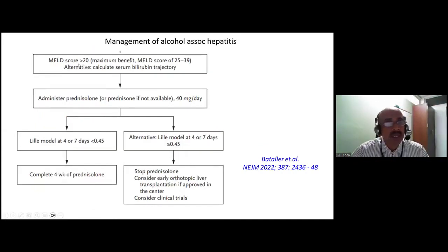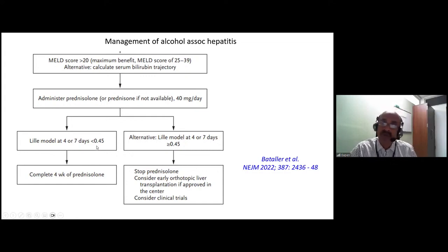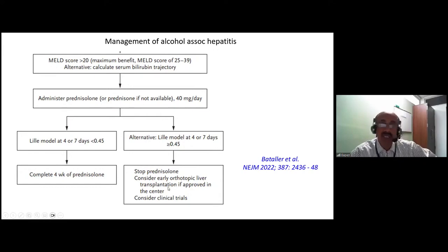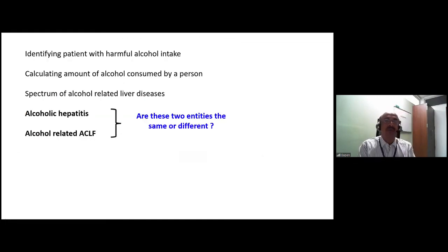Returning to the algorithm: a person with severe alcoholic hepatitis and MELD more than 20 is a candidate for steroid therapy per the Western strategy, with maximum benefit at MELD 25 to 39. Administer prednisolone 40 mg per day and assess the bilirubin response at day 4 or day 7 using the Lille model. If Lille score is less than 0.45, bilirubin is coming down — complete four weeks of treatment. If more than 0.45, stop prednisolone and consider early liver transplantation if approved at the center, or consider clinical trials. However, this is the standard Western teaching — in India, giving 40 mg of prednisolone to these patients is concerning due to high infection risk, and in practice many physicians would not routinely give steroids at this dose.